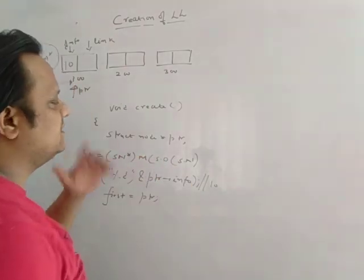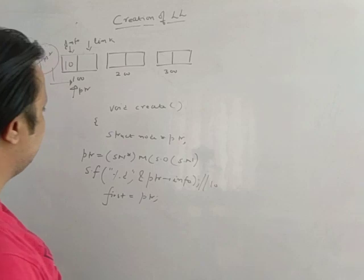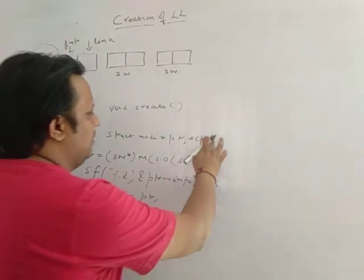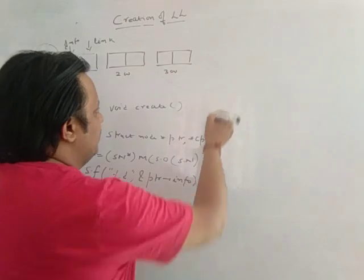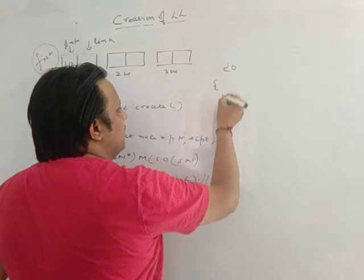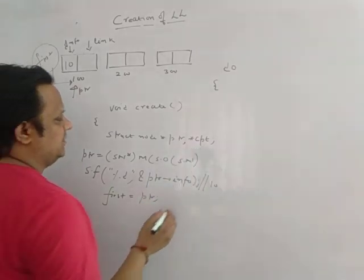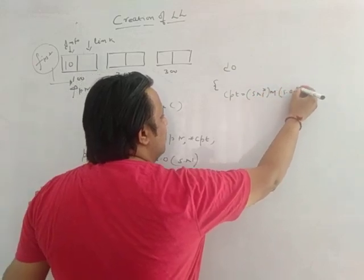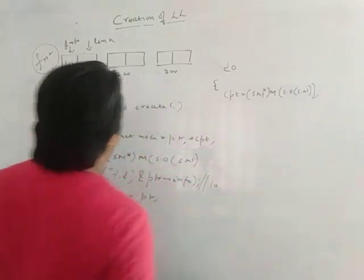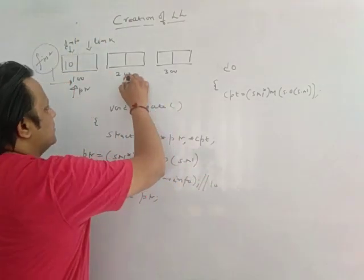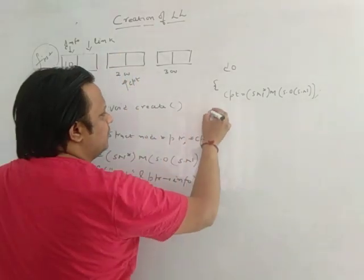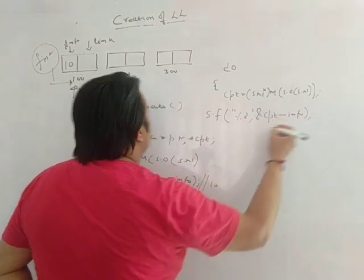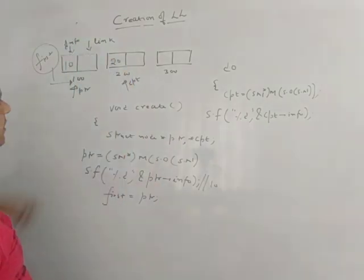Next, we want to create one more node and make a proper linkage. For that I require another pointer, cpt. I allocate memory: cpt = (struct node*) malloc(sizeof(struct node)). Once this is written, a new block gets created pointed to by cpt. I then insert the info part using scanf("%d", &cpt->info). Let's suppose I enter 20 — so this becomes my second node.